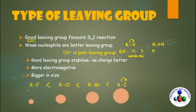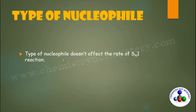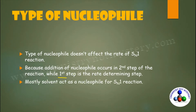The type of nucleophile does not affect the rate of SN1 reaction, because the nucleophile attack comes in the second step and the first step is the rate-determining step. So mostly the solvent acts as the nucleophile in SN1 reaction.